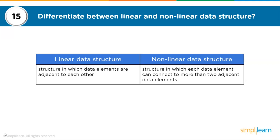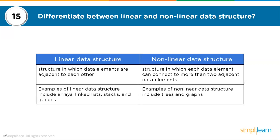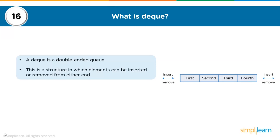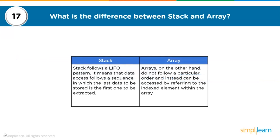The difference between linear and non-linear data structures: in a linear data structure, data elements are adjacent to each other, whereas in a non-linear data structure, each element can connect to two or more adjacent elements. Examples of linear data structures are arrays, linked lists, stacks, and queues. Examples of non-linear data structures are trees and graphs. A deque (double-ended queue) is a structure in which elements can be inserted or removed from either end.